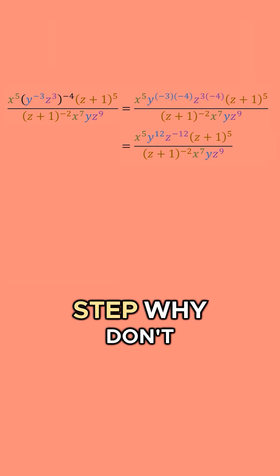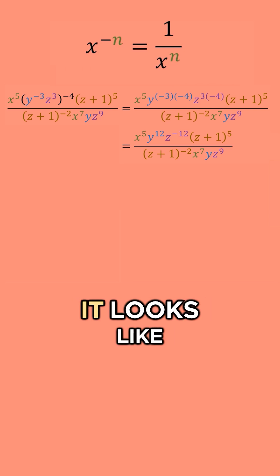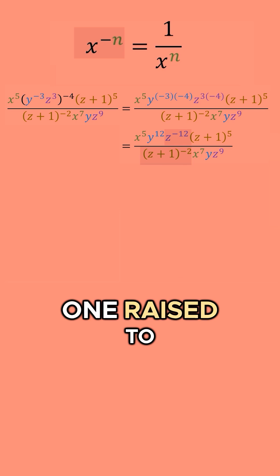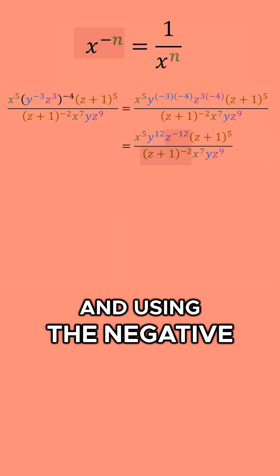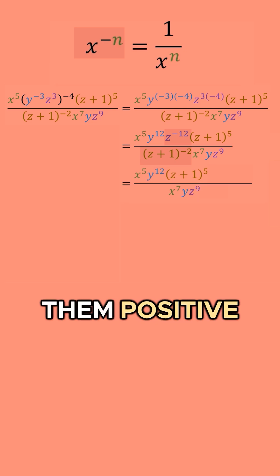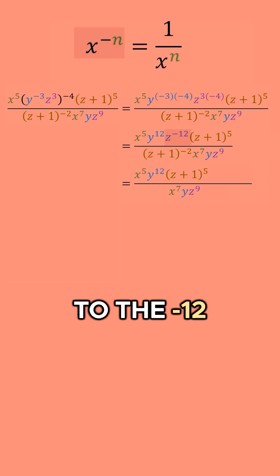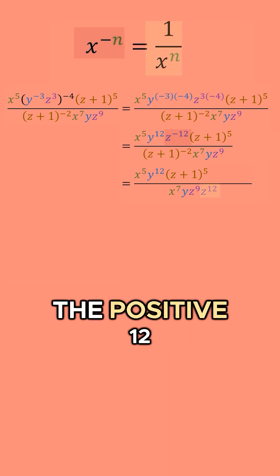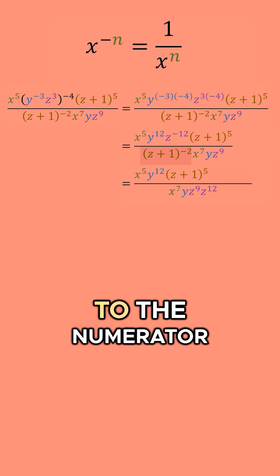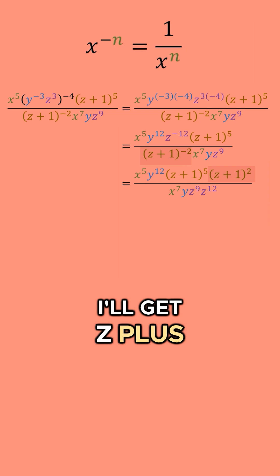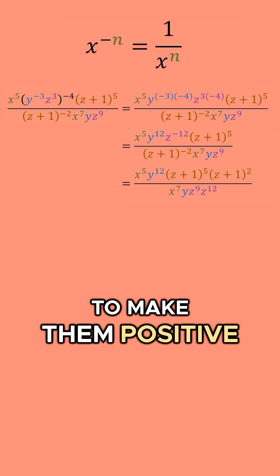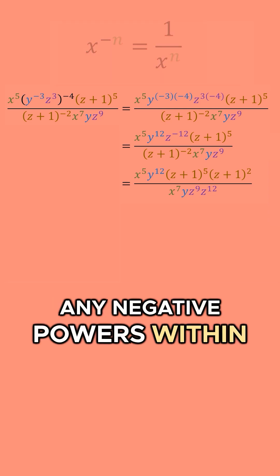On our next step, let's get rid of all of our negative powers. I have z to the negative twelfth power on top, and on the bottom I have z plus one raised to the negative two power. Using the negative exponent rule, I can move them up and down to make them positive. This brings z to the negative twelfth down to the denominator as z to the positive twelfth, and brings z plus one to the negative two from the denominator up to the numerator as z plus one to the second power. So now we don't have any negative powers.